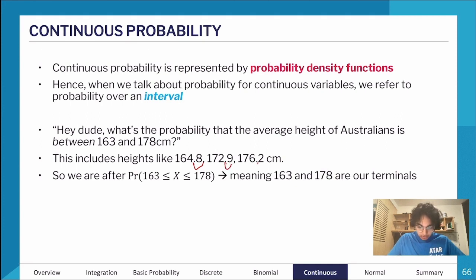What's the probability that someone is between 163 and 178? That includes these point heights like 0.9, 0.2. If we want to find 163 to 178, we take the integral from 163 to 178 of f(x) dx, as shown in the slide earlier.